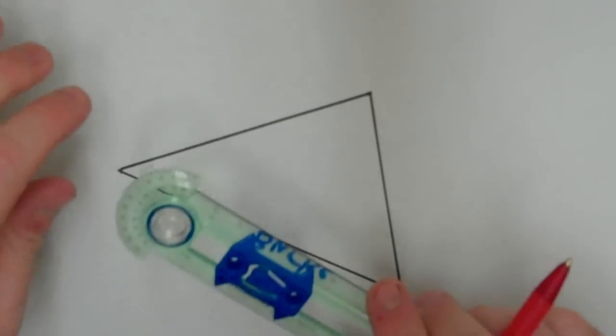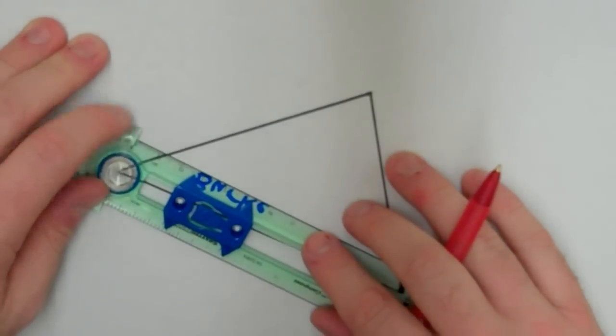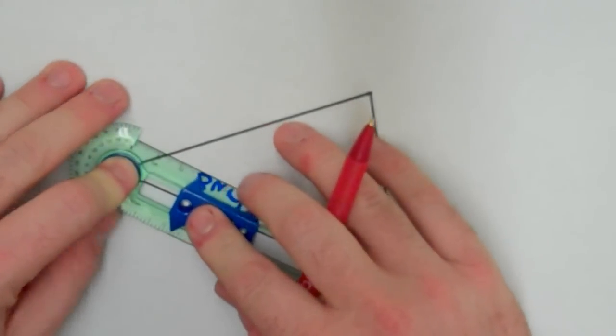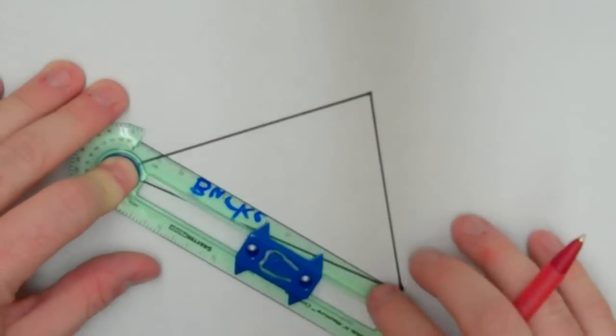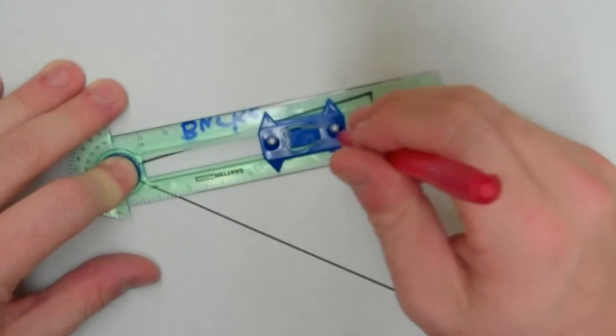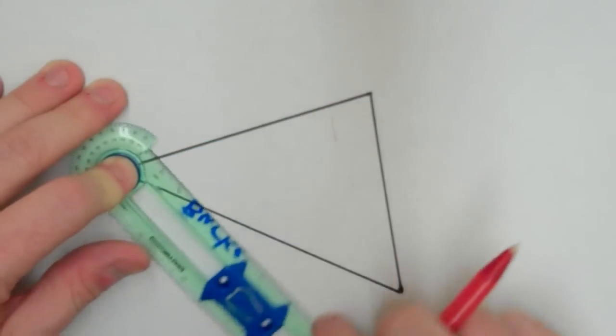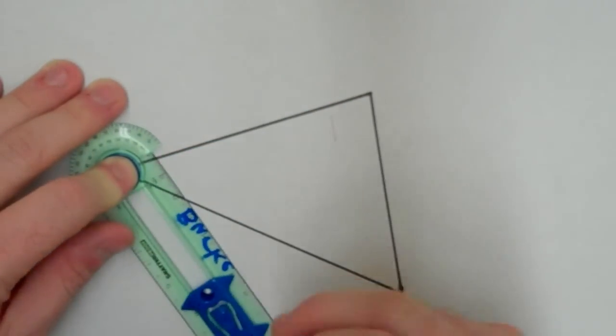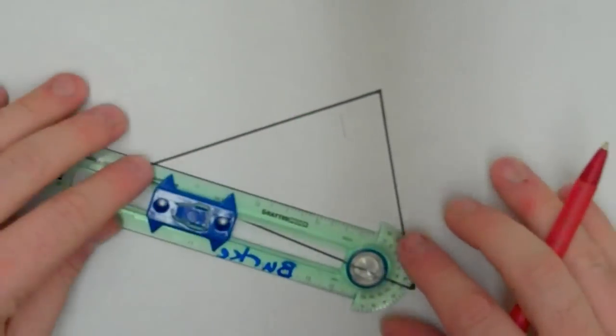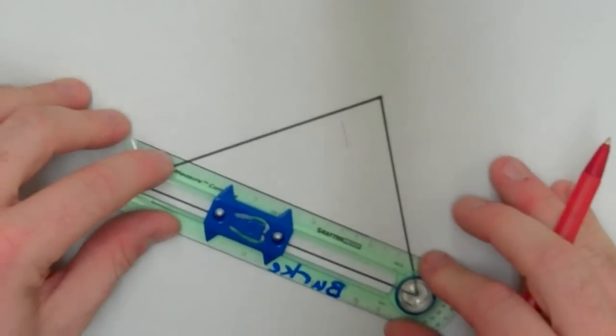So, let me show you what I mean by that. I'm going to find the midpoint of this segment right here. I'm going to start out like I'm going to do a perpendicular bisector. So, I put the point of the compass on the vertex, open it up more than halfway. I'm going to make a mark above and a mark below.